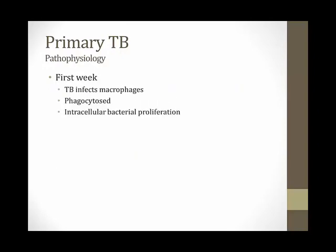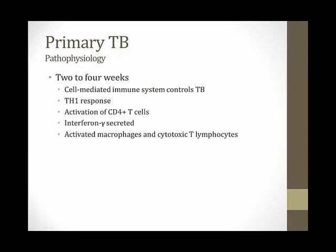At a pathophysiologic level during primary TB: the bug enters macrophages, gets phagocytosed, proliferates inside the macrophage, then kills it. When the macrophage dies, it spills tuberculosis throughout the lungs to infect other cells. After a few weeks, the cell-mediated immune system kicks in. It's high yield to remember: the response to TB is a cell-mediated immune response. Antibodies and complement don't play a major role. It's a TH1 response with CD4+ T cells secreting interferon-gamma, and eventually activated macrophages and cytotoxic T lymphocytes control the infection.